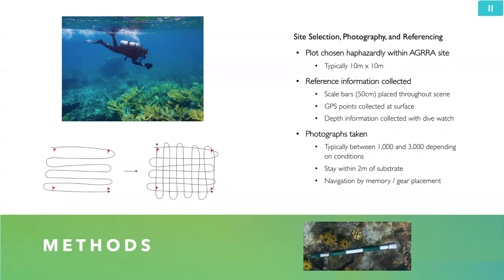We take a photo every second with the camera on intervalometer mode. For a site that's around 10 by 10, or sometimes 10 by 20 or even larger, this can take somewhere around one to three thousand photographs, depending on conditions like depth and how structurally complex the section of reef is. We try to stay within about two meters of the substrate to limit the effects of backscatter and water absorption of light. Navigation is done by memory and by looking at the gear we've placed on the bottom.